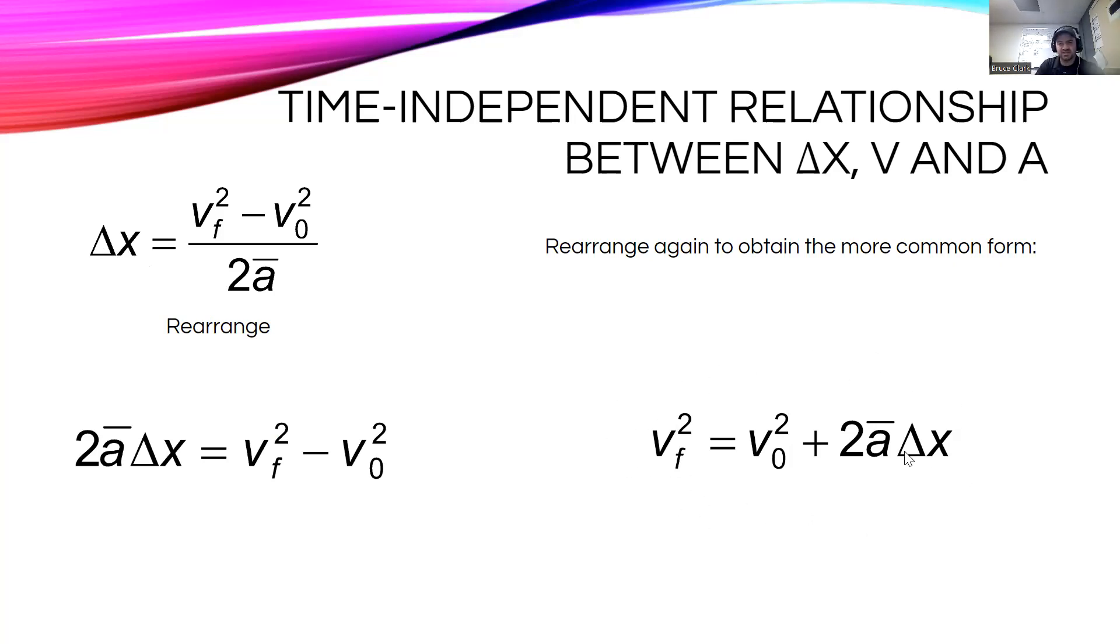So final velocity squared equals initial velocity squared plus two a times the distance. Okay, so for everything, double check: for everything on worksheet number three today, you're going to be using this formula here.